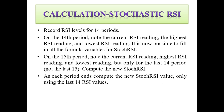The generally used number of periods is 14. On the 14th period, note the current RSI reading, the highest RSI reading, and the lowest RSI reading, then apply these into the equation. On the 15th period, note the current, highest, and lowest RSI readings — but only for the last 14 periods, not 15. In that way you compute the new Stochastic RSI value, updating it as each period ends using only the last 14 RSI values.